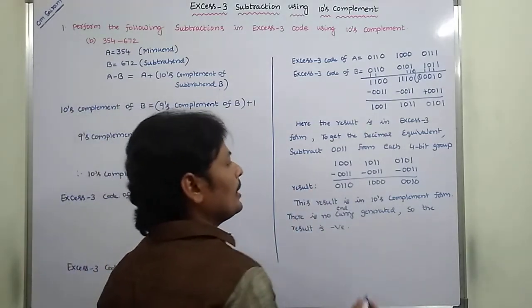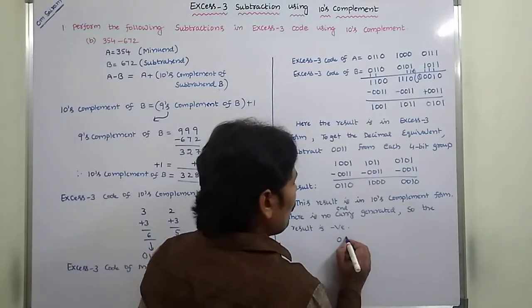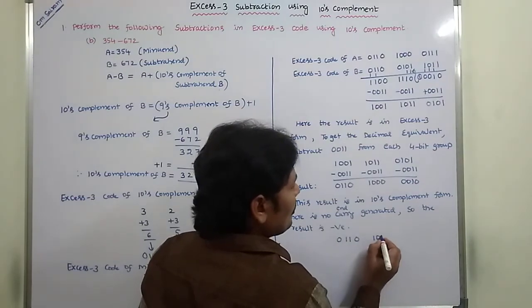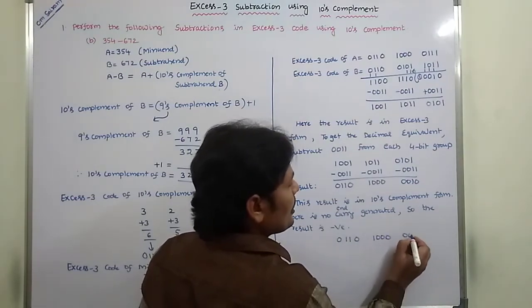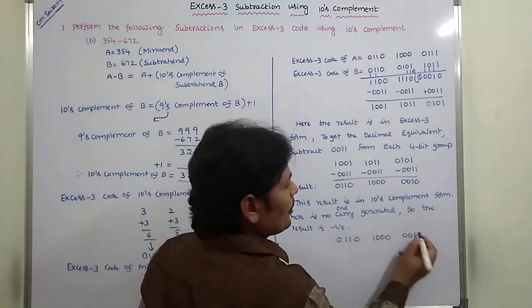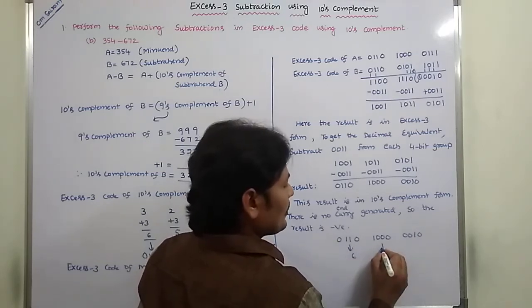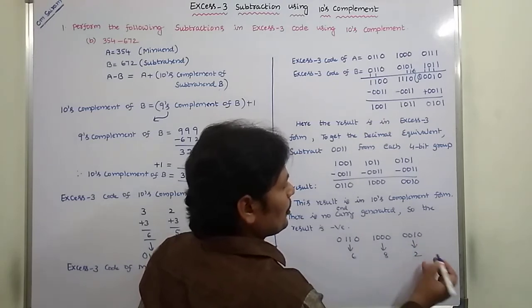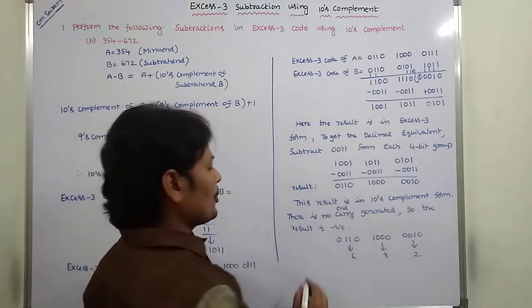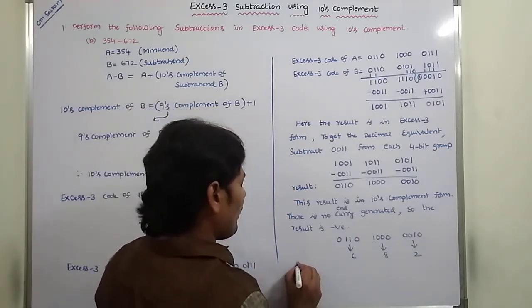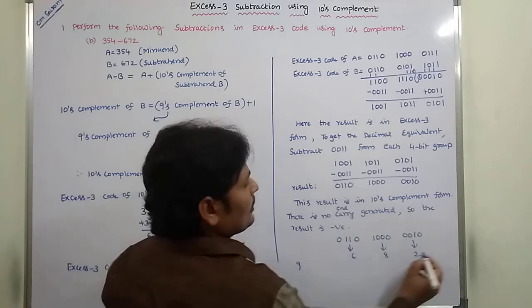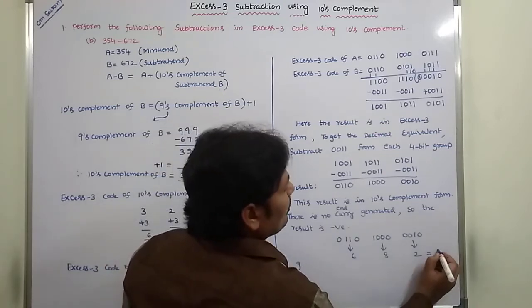Reading the binary result: 0110 1000 0010. The decimal equivalent is 6, 8, 2. So the value is 682 in base 10.